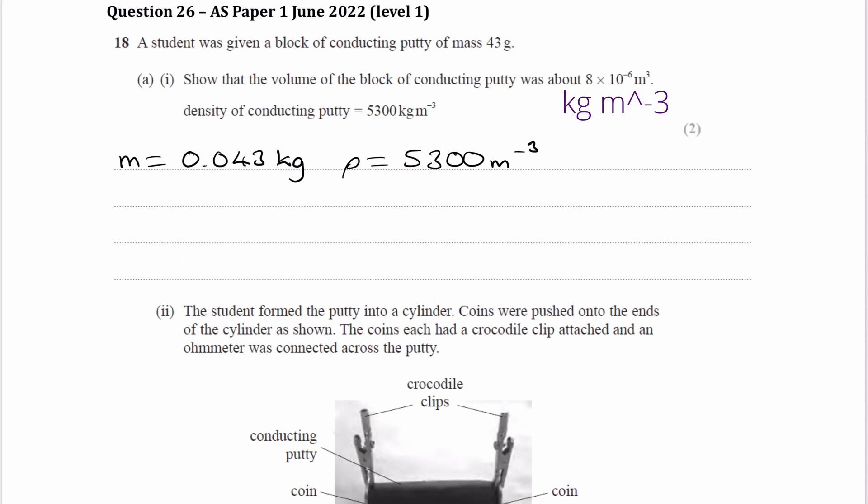So this should be straightforward. We're trying to work out volume. Density is mass over volume, so then volume is equal to mass over density, or 0.043 divided by 5,300. Put this in your calculator, and you end up with 8.113 times 10 to the minus 6. And that is approximately 8 times 10 to the minus 6 meters cubed.